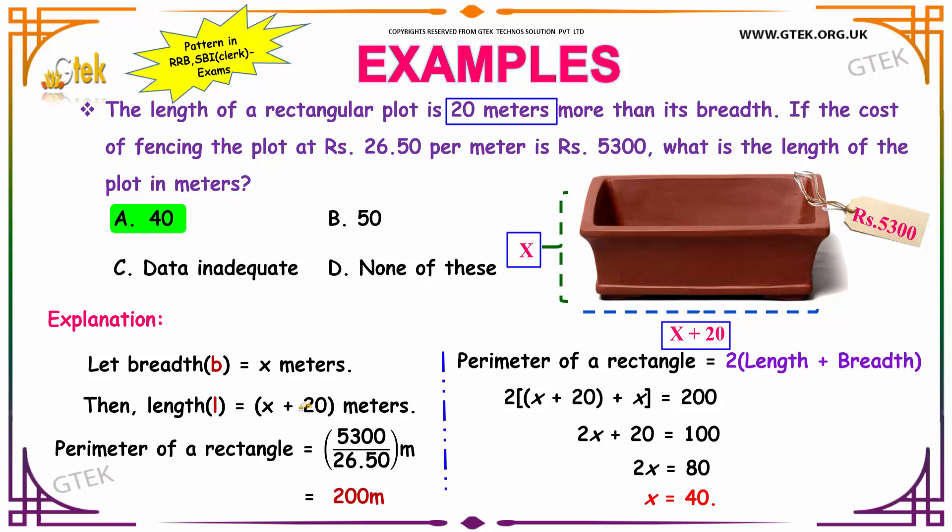To find the perimeter of the rectangle, we are dividing our total cost of fencing, that is Rs 5300, by the cost of fencing per meter. That gives you the perimeter of the rectangle which has been fenced. 5300 divided by 26.50 will give you 200 meters.